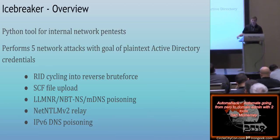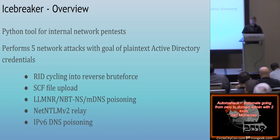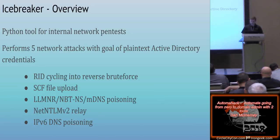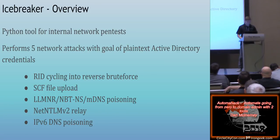Here are the five attacks: RID cycling into reverse brute force, SCF file upload — SCF stands for shell command file — LLMNR, NBTNS, and MDNS poisoning, which is highly effective, NetNTLM version 2 relaying using the Impacket library, which is my favorite attack, and IP version 6 DNS poisoning. This newest attack uses a tool called MITM6 from Fox IT, which does complex attacks to get network hashes from people on the Active Directory environment.